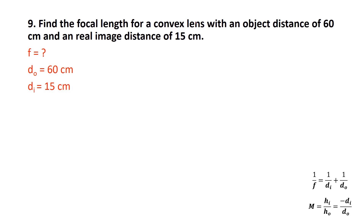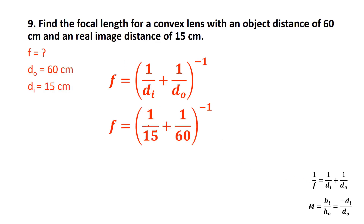Problem 8: Find the focal length for a convex lens with DO = 60 cm and a real image DI = 15 cm. Rearranging for F: F = (1/DI + 1/DO) inverse = (1/15 + 1/60) inverse. I type 1÷15 = plus (1÷60) = to get 0.08333, then hit inverse to get 12. The focal length is 12 centimeters.